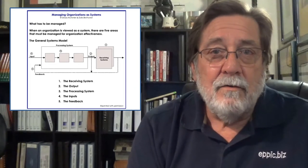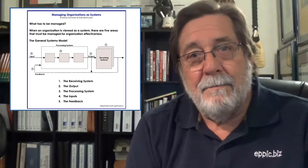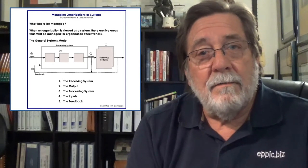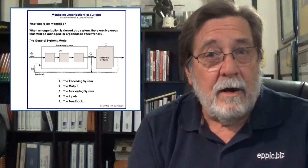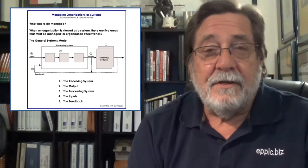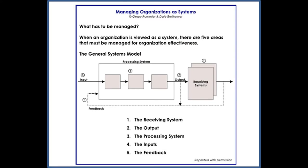I borrow a lot from this model, published in the late 90s — some work that Gary Rumler and Dale Brethauer had done, published in one of my quarterly newsletters. There are five components to their version of a process: the receiving system downstream on the right; the output as an input going into that receiving system; the processing system that generates that output through tasks and steps; the inputs into that process — outputs from upstream; and then the feedback systems, which also include consequences.